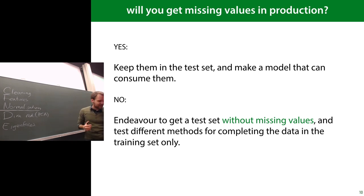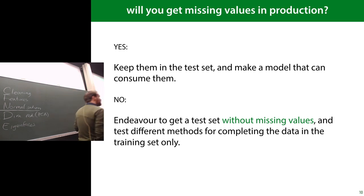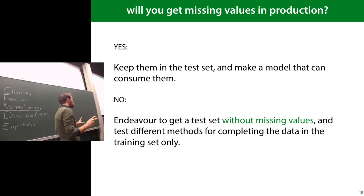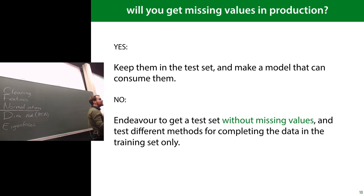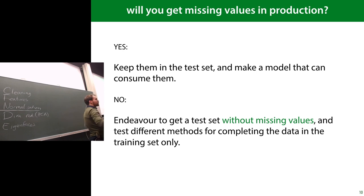Sometimes missing values are just an artifact of the training data, and once you hit production you won't see them. In that case, ideally find a way to get a test set without missing values that still represents the data distribution. Then deal with the missing values in your training data — fill them in, remove them, or handle them some other way. The important concern is always: what's going to happen in production?